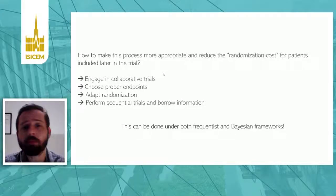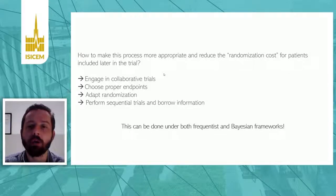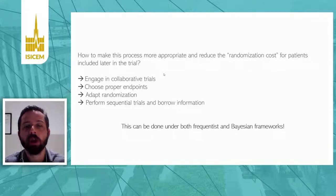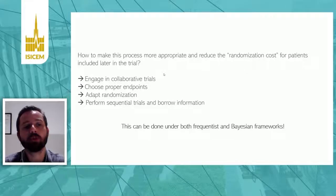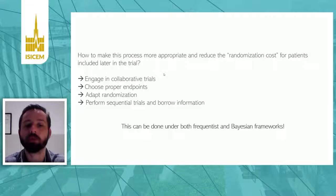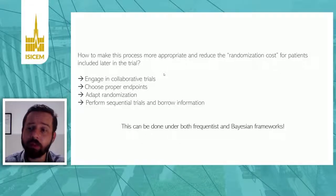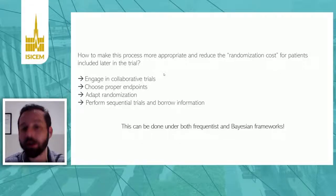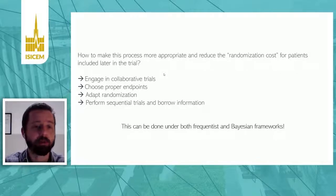This raises other questions: how to make the process of including patients more appropriate and how to reduce randomization costs, since information is acquired during the trial. One way is to engage in collaborative trials, choose proper endpoints, adapt randomization, and perform sequential trials with information borrowing. This can be done in both frequentist and Bayesian frameworks, though it may be easier under Bayesian frameworks.